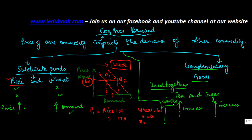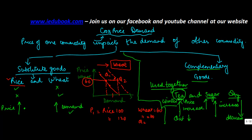If the price of tea increases, the quantity of tea demanded will decrease. So a price increase in tea will result in a decrease in the quantity of sugar demanded. The quantities are correlated — an increase in quantity demanded for one results in an increase for the other. However, a price increase in one will result in a decrease in demand for the other. Once the price of tea increases, demand for tea goes down, and so does the demand for sugar.